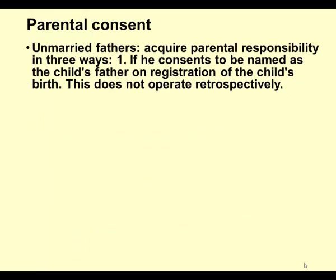Unmarried fathers can acquire parental responsibility in three ways. First, consent to be named as the child's father on the registration of the child's birth — but this does not operate retrospectively, you can't go and add the name in afterwards. If you are the named parent on the birth certificate, you have a parental right even if you're not married. Second, by a formal parental responsibility agreement signed by both mother and father, witnessed by the court and registered.